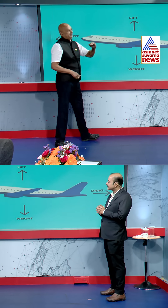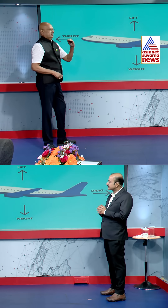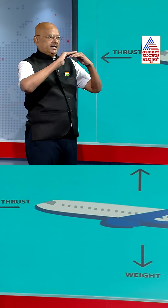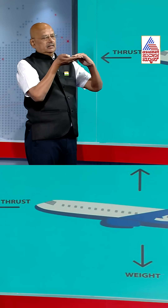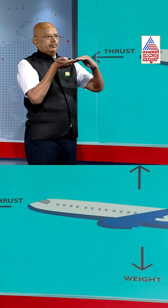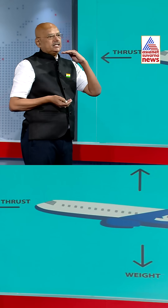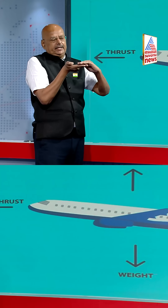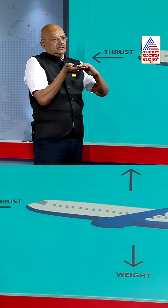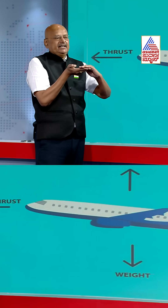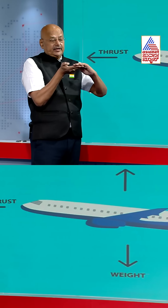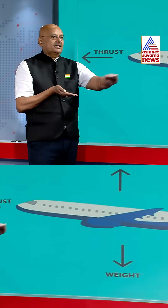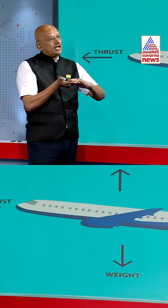If you observe the aeroplane wings, the upper portion is bent and the lower portion is flat. At one speed, the pressure on the upper portion of the wing is so much that it cannot roll on the runway — it has to take off.